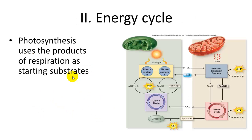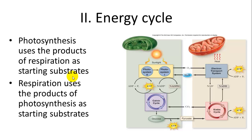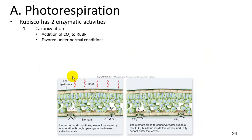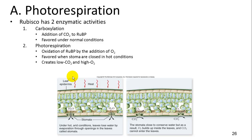Photosynthesis uses the products of respiration — water and CO2 — as starting substrates, and respiration uses the products of photosynthesis — oxygen and sugar — to make ATP. A problem called photorespiration can occur: RuBisCO has two enzymatic activities. Normally it adds CO2 to RuBP, but when it gets too hot, it oxidizes RuBP by adding oxygen instead.